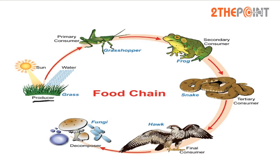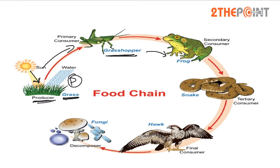Let us look at one such food chain. The primary producer, grass, makes its food using incoming solar radiation by a process called photosynthesis. This becomes the food for the primary consumer, which in this case is a grasshopper, which is then fed upon by a frog, the secondary consumer.